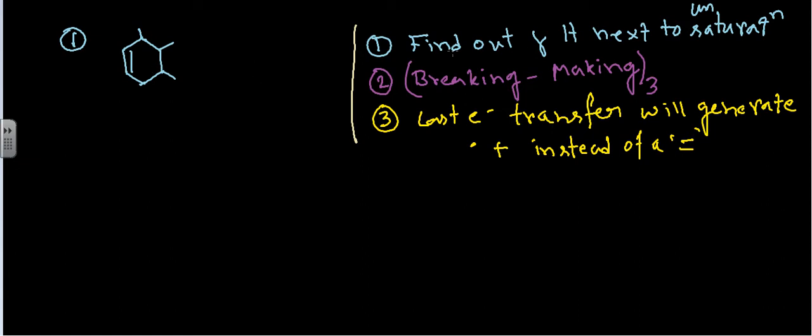So let's first find out the gamma hydrogen of this place. The gamma hydrogen of this place, let me change the color here, is going to be this one. So this is the gamma hydrogen here, and here it is the saturation-unsaturation point. So we need to find the gamma hydrogen next to unsaturation. We find the gamma hydrogen which is at this point.